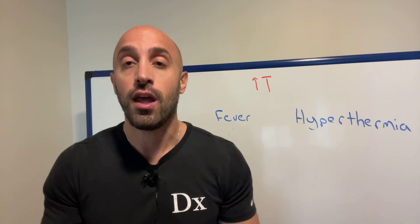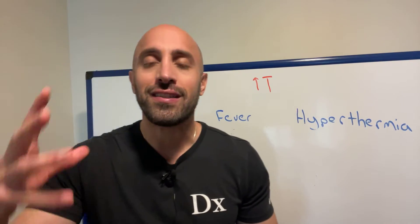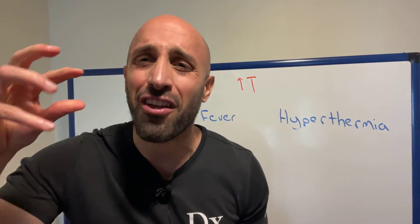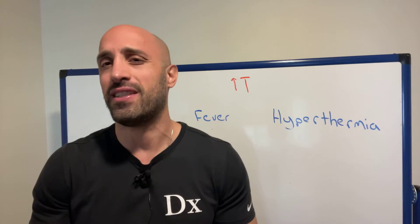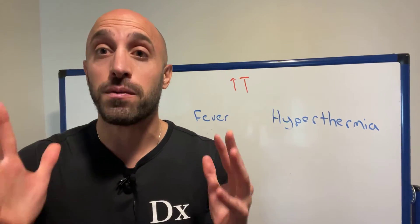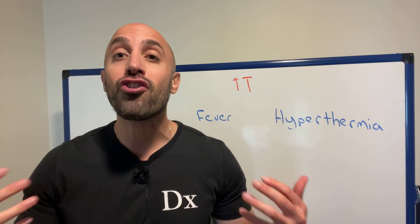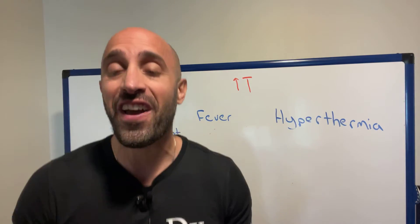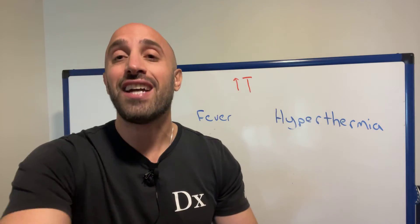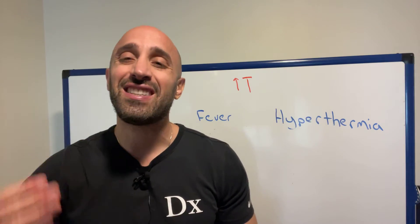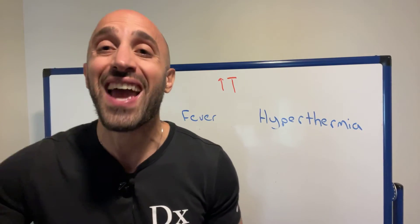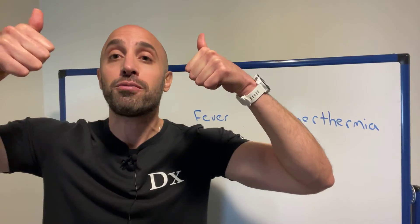Let's first talk about fever. All of us in our hypothalamus have a temperature set point — imagine that being the thermostat of the body, set to 37 degrees Celsius. But if you have an underlying inflammatory process like an infection, you get cytokine release. Those cytokines ultimately lead to elevations in prostaglandin E2 through activation of the COX enzyme, which increases the temperature set point.